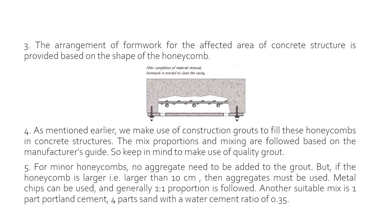If the honeycomb is larger than 10 centimeters, it clearly means that the spaces of aggregates are also observed as voids. So it's not enough to fix it using grout alone — instead you need a composition of aggregates, cement, and water to fill the defect. We make use of metal chips, and generally a 1:1 proportion is followed for that particular mix. Another suitable mix is one part of Portland cement and four parts of sand with a water-cement ratio of 0.35.